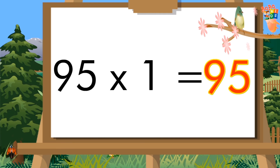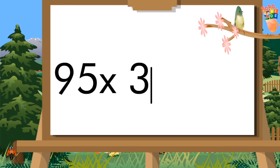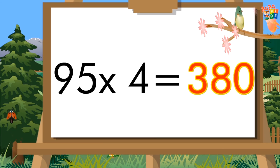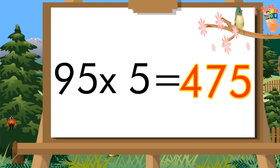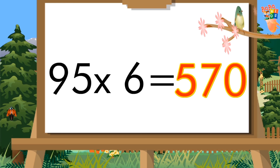Ninety-five ones are ninety-five. Ninety-five twos are one hundred ninety. Ninety-five threes are two hundred eighty-five. Ninety-five fours are three hundred eighty. Ninety-five fives are four hundred seventy-five. Ninety-five sixes are five hundred seventy.